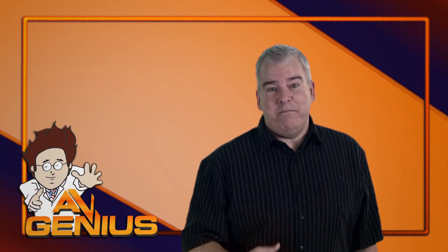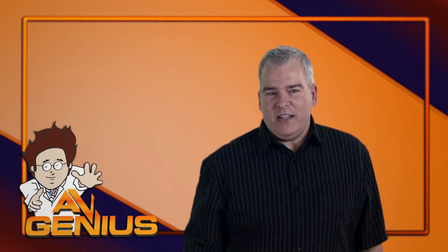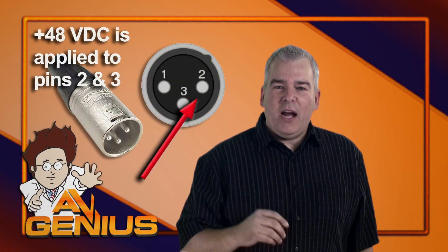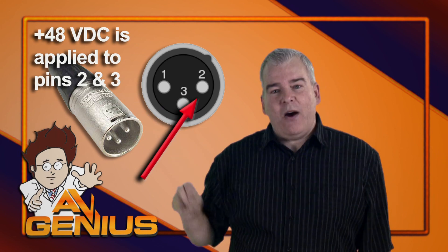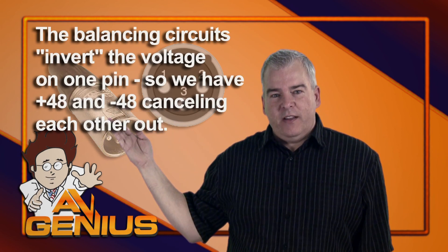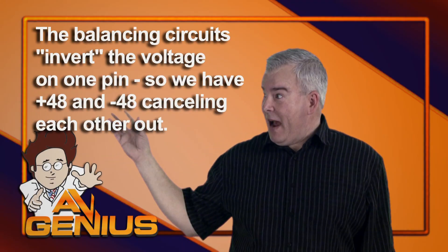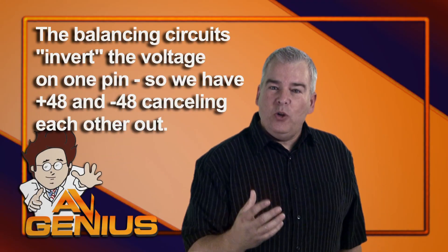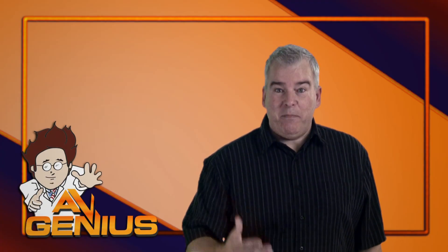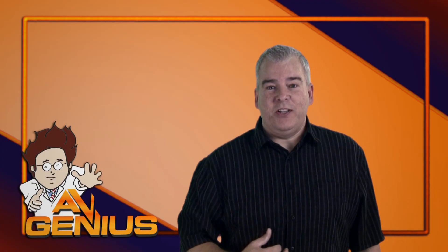It's called Phantom Power because in balanced audio devices, 48V positive is applied equally to the two power wires. Then, one of those signals is inverted, and when the signals are recombined, which is the balancing part, the voltage is completely cancelled out. Thus, the term Phantom Power, because it disappears on the other end.